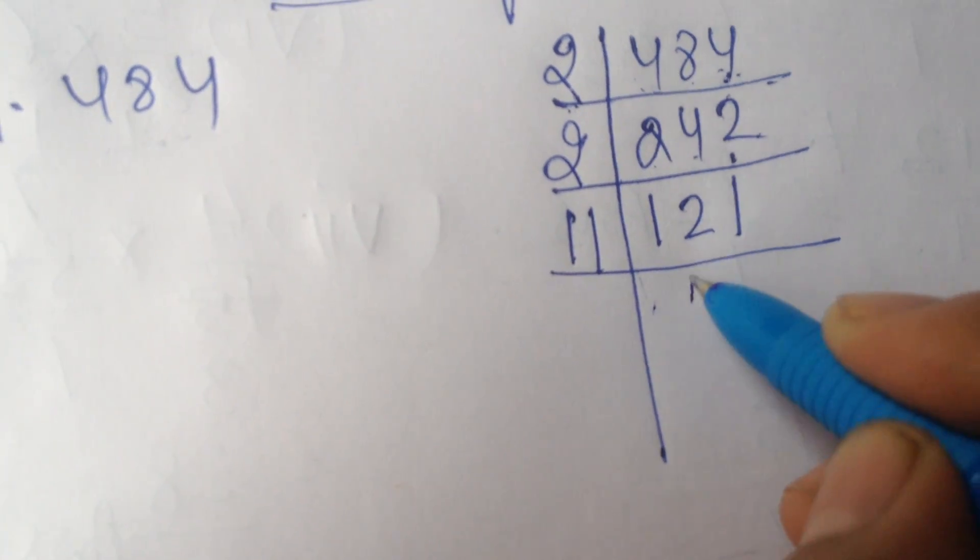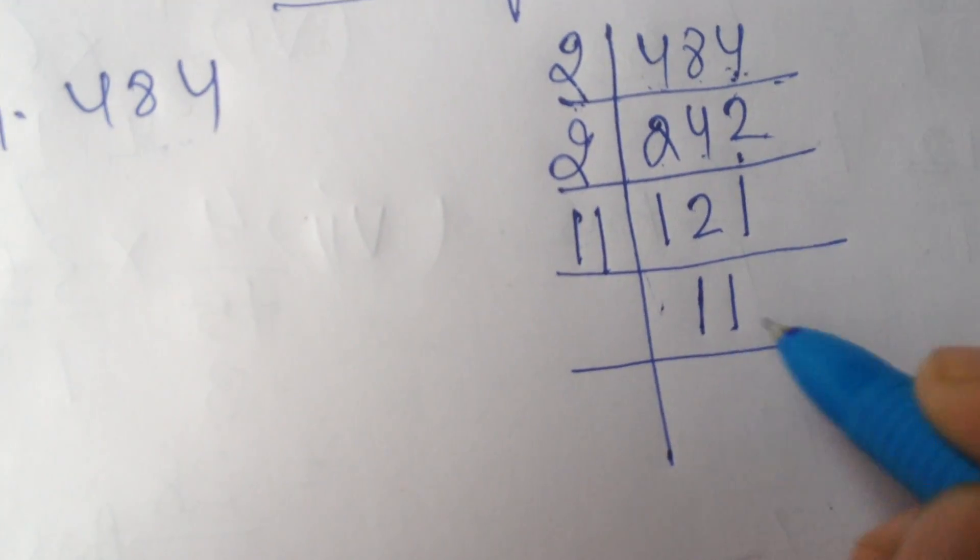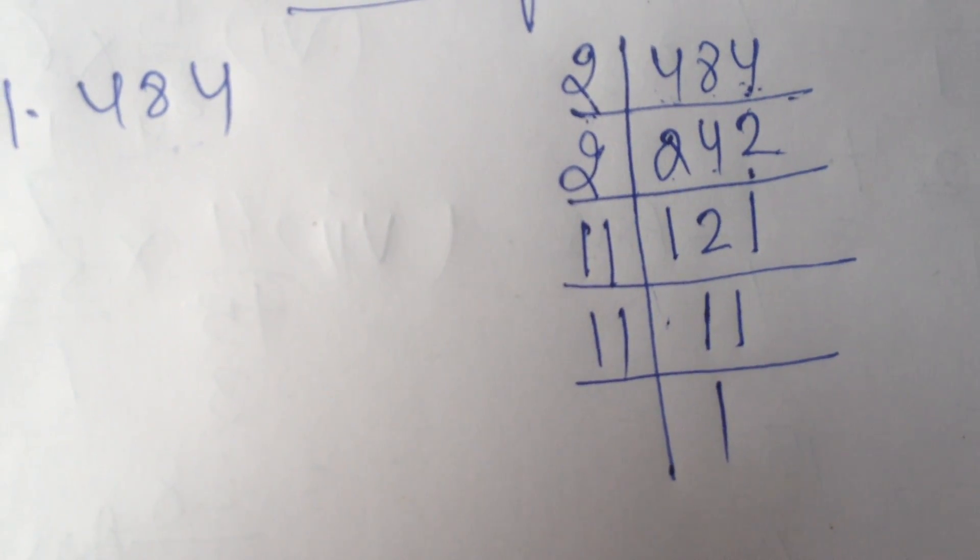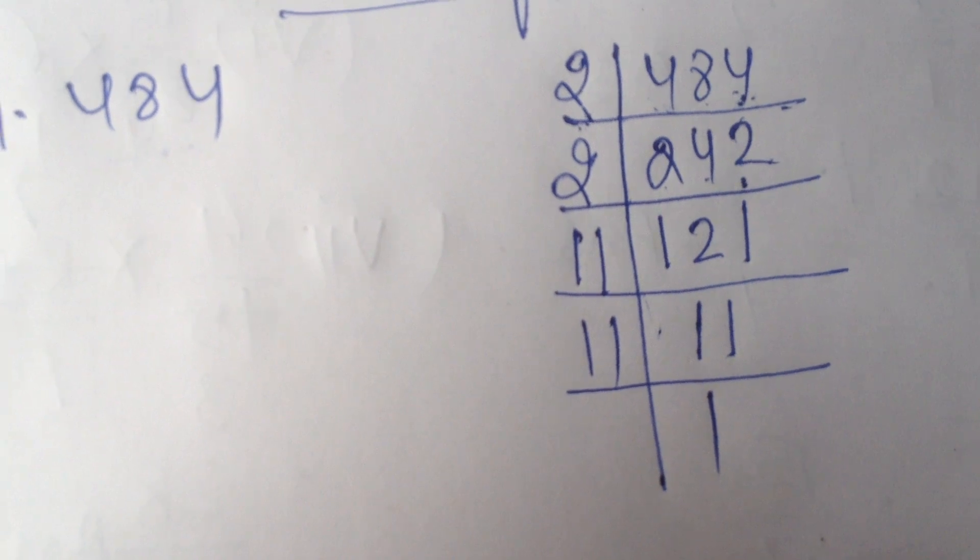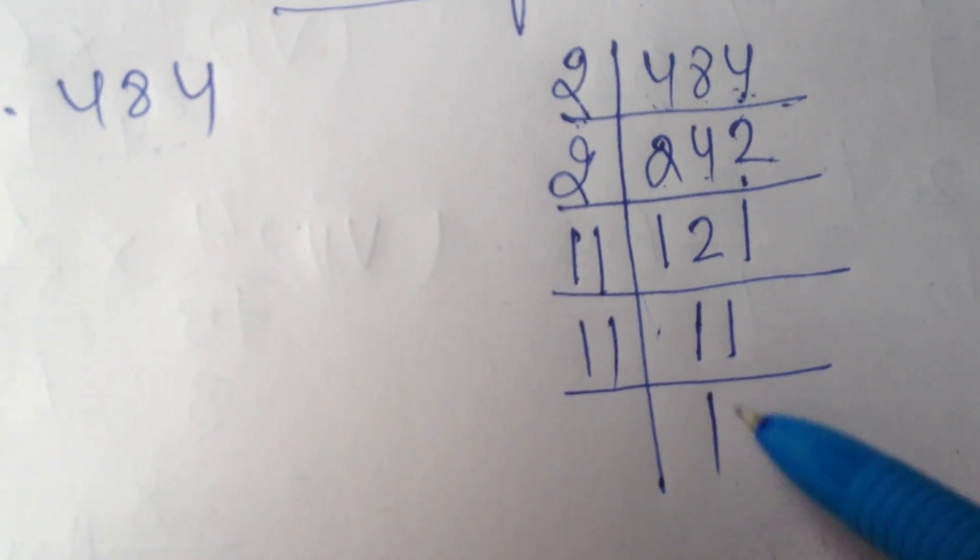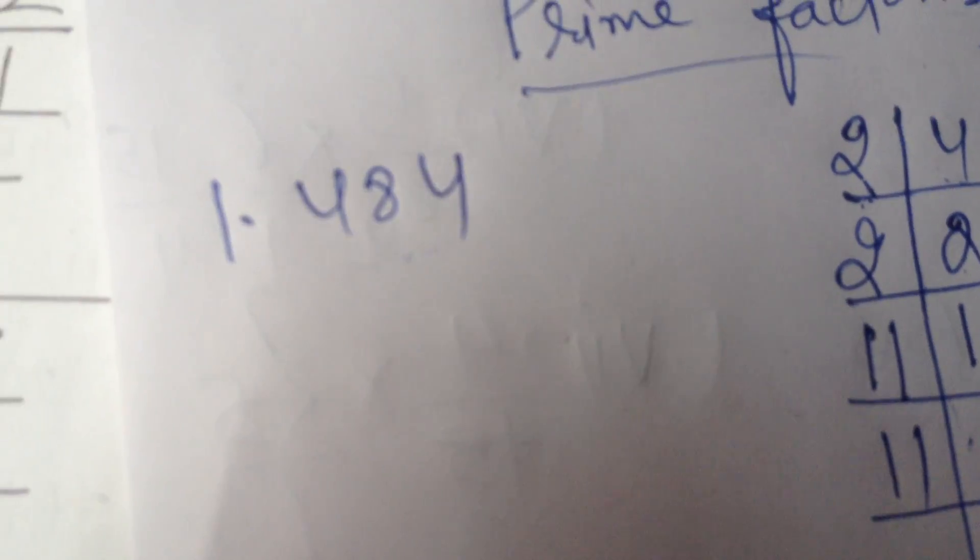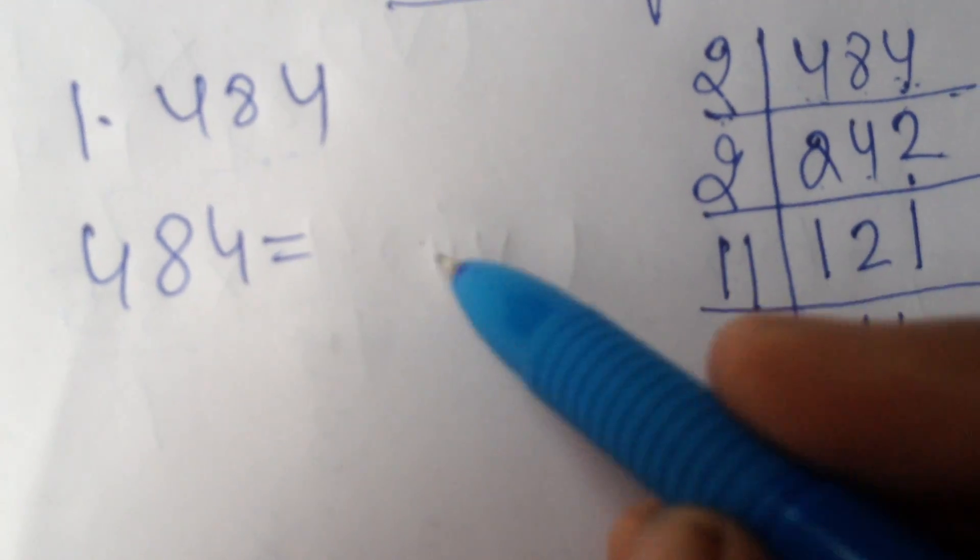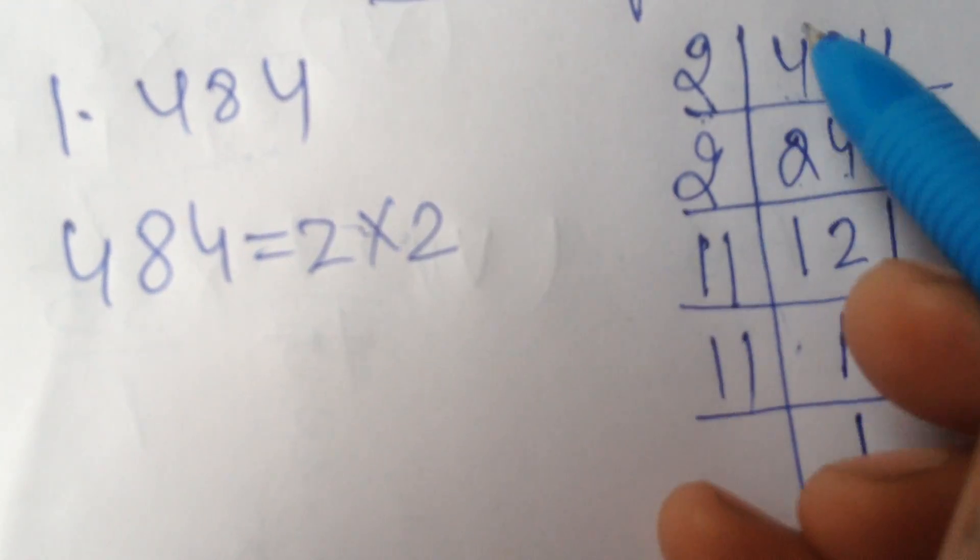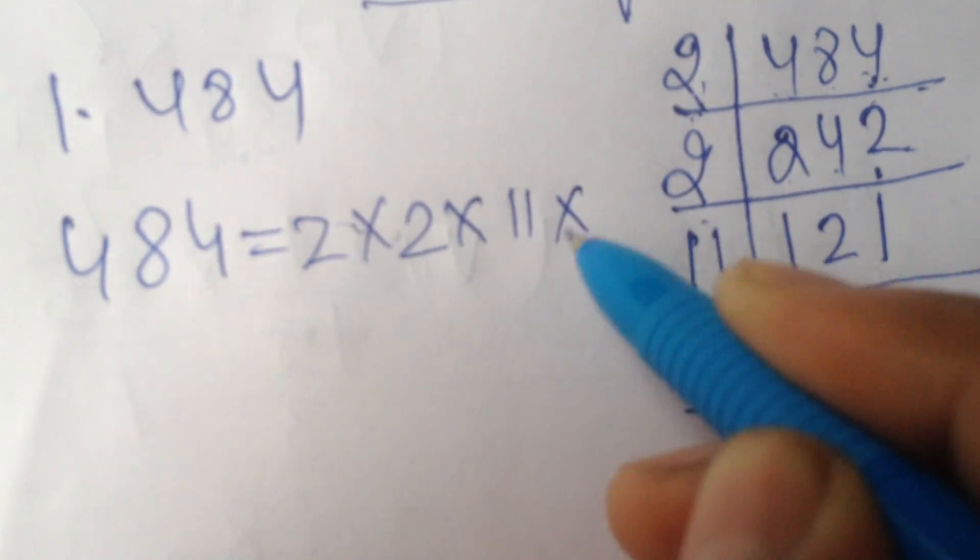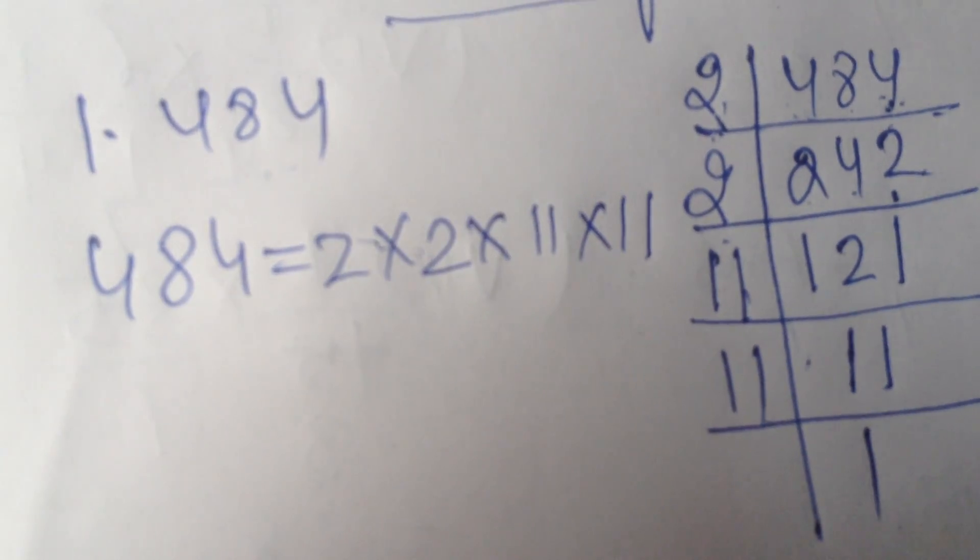Again, we will divide this by 11. We will get answer 1. Divide in your rough copy and check. Jab tak neeche 1 nahi aata, tab tak we continue division. Up to here understood?